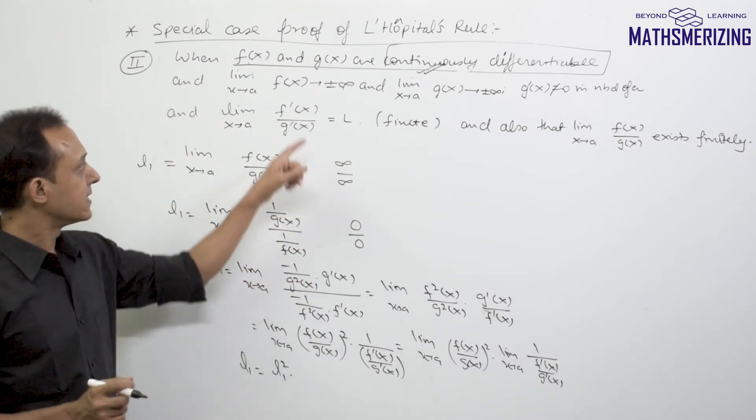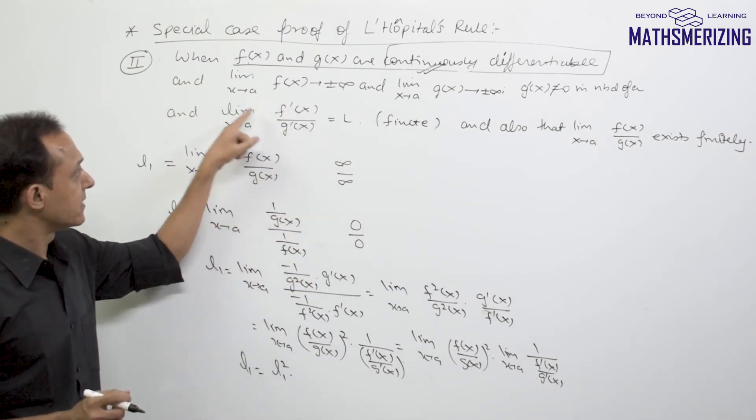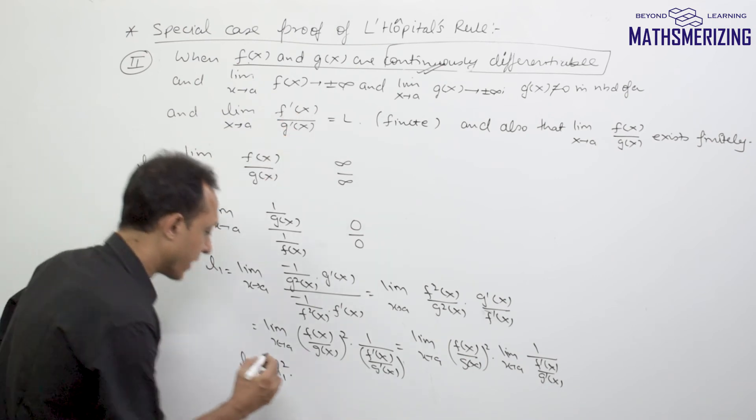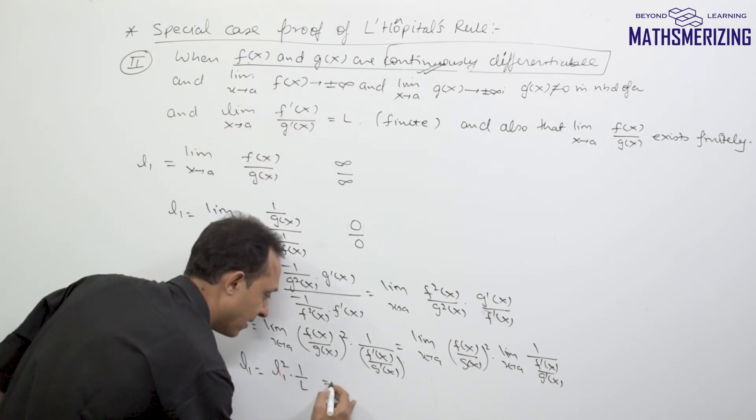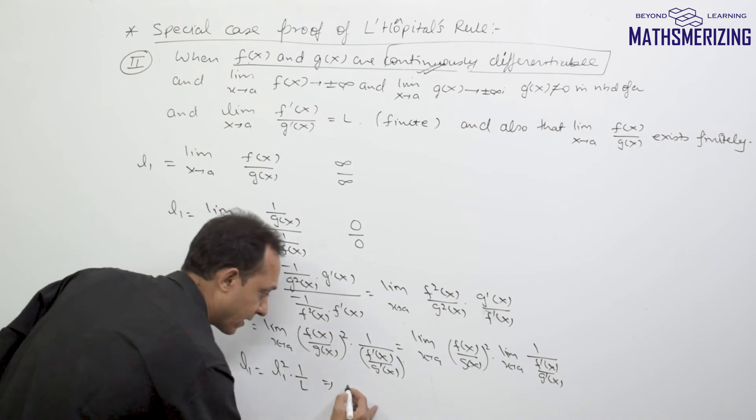Now 1 upon f'(x) upon g'(x), so f'(x) upon g'(x) this limit is equal to L. So I can write it as 1 upon L. So if I'll cancel L1 with L1, I can write L1 equals 1 upon L.